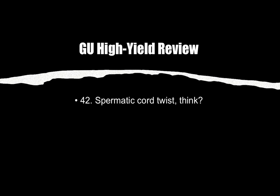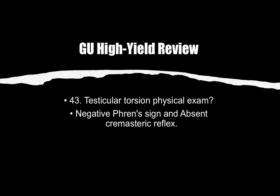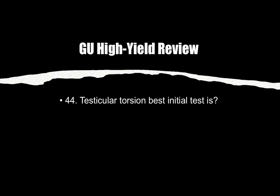Number forty-two through forty-four: Spermatic cord twist should make you think of testicular torsion. On physical exam, testicular torsion will show a negative Prehn's sign and absent cremasteric reflex. The best initial test for testicular torsion is testicular Doppler ultrasound, which will show decreased blood flow.